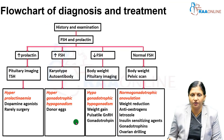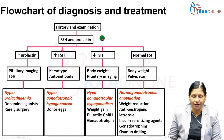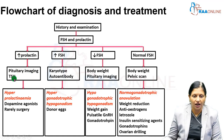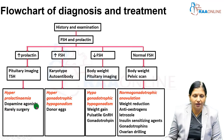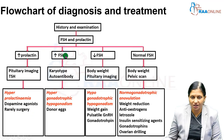The flowchart of diagnosis and treatment begins with history, examination, and measurement of serum FSH and prolactin levels. If prolactin is high, pituitary imaging and TSH are done. For hyperprolactinemia, a dopamine agonist like cabergoline is given. If there is a prolactinoma — micro or macro — surgery may rarely be needed.